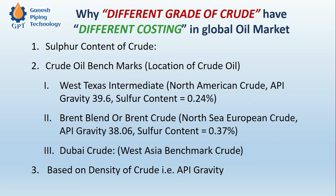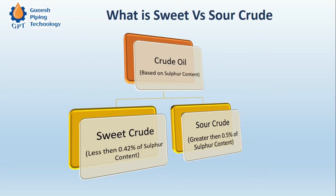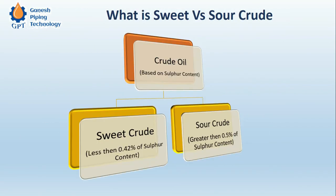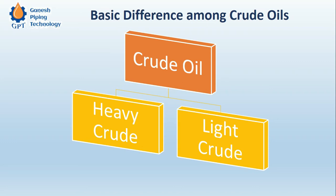If you are going to procure these two crudes, the lighter crude will be costlier because the investment for refining will be lower. This diagrammatic representation shows the crude classification based on the API gravity number — heavy crude versus light crude. Additionally, this diagram shows sweet versus sour crude classification based on sulfur content.